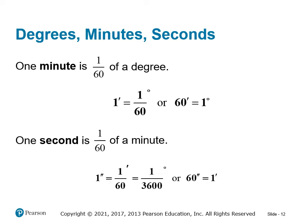Note the notation: one apostrophe denotes one minute in angular measure, and a quotation mark (two apostrophes) denotes one second. One second equals one sixtieth of a minute, which also equals one three-thousand-six-hundredth of a degree — that's 1/60 times 1/60, giving 3600 in the denominator. So 60 seconds equals one minute. Think of degrees as hours: 60 minutes is one degree, 60 seconds is one minute.